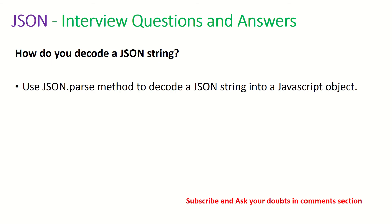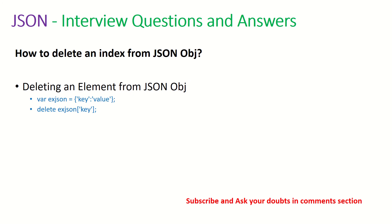How do you decode a JSON string? Once we have done JSON.stringify and have a string, we can use JSON.parse to decode a JSON string back into a JavaScript object. How do you delete an index from a JSON object? To delete an index from a JSON object, you can write something like: var ex = { jsonKey: value }, then use delete ex.json. However, remember it is advised never to use delete directly — instead, handle it through programmatic objects.